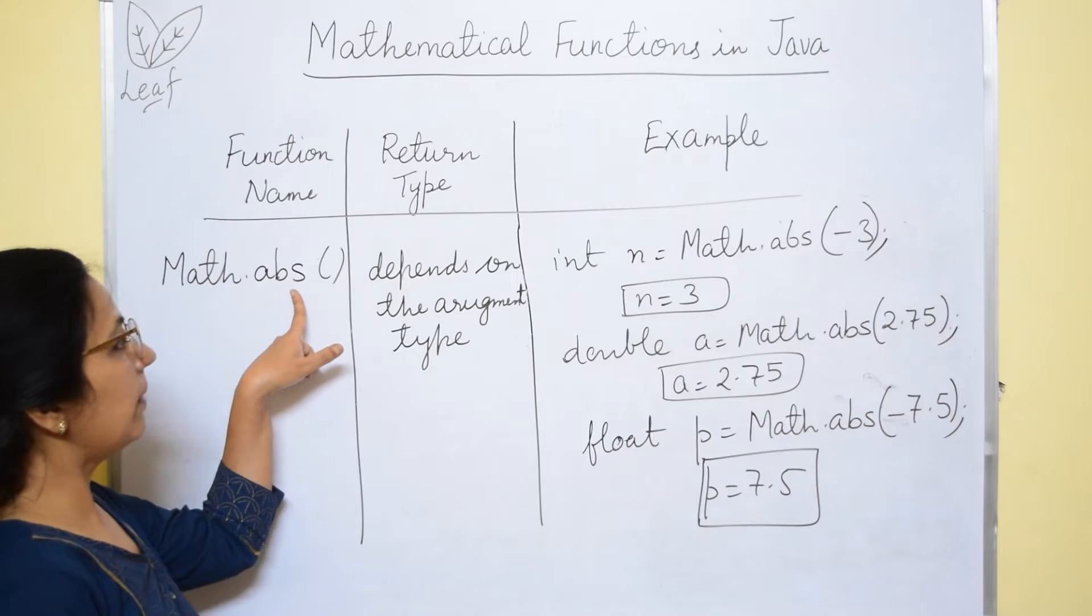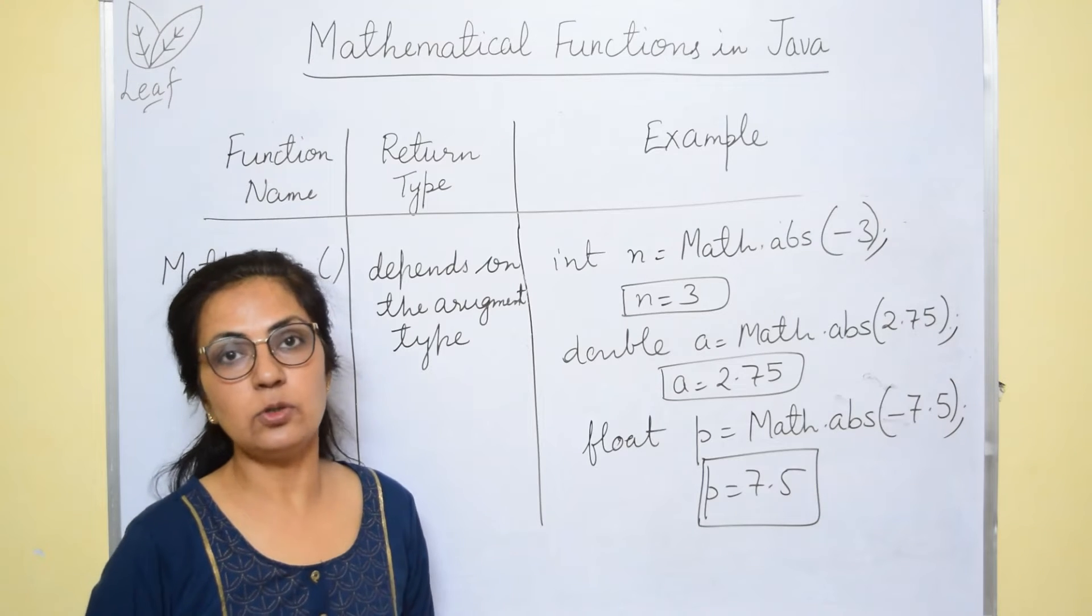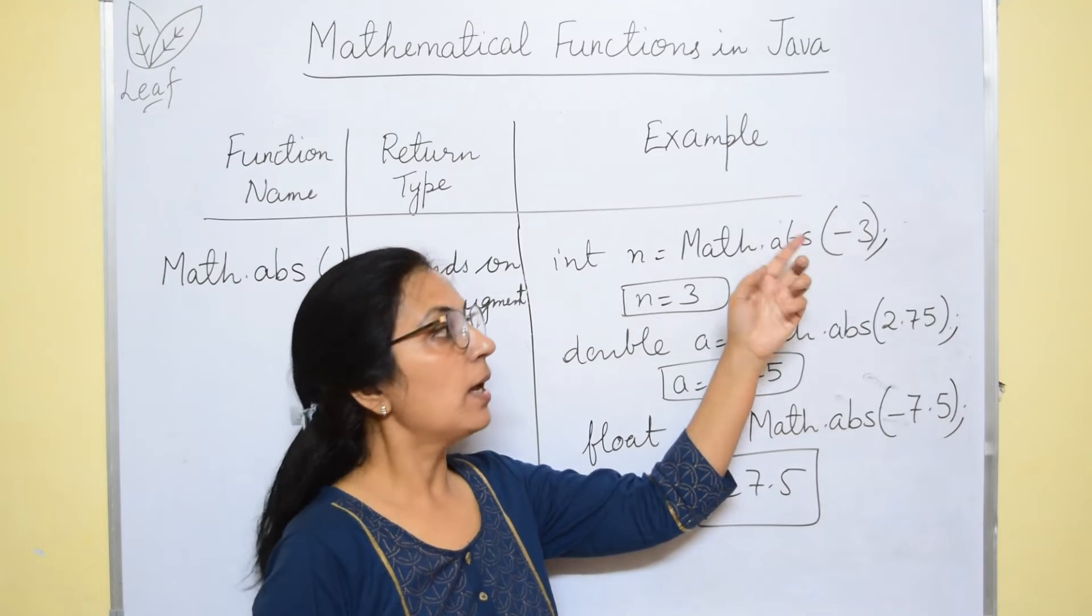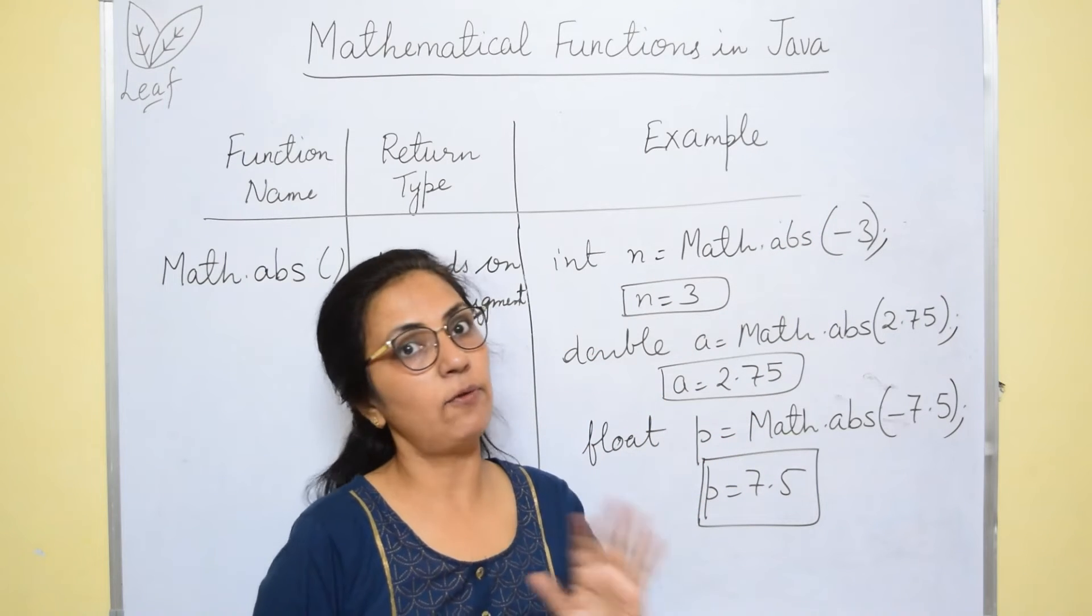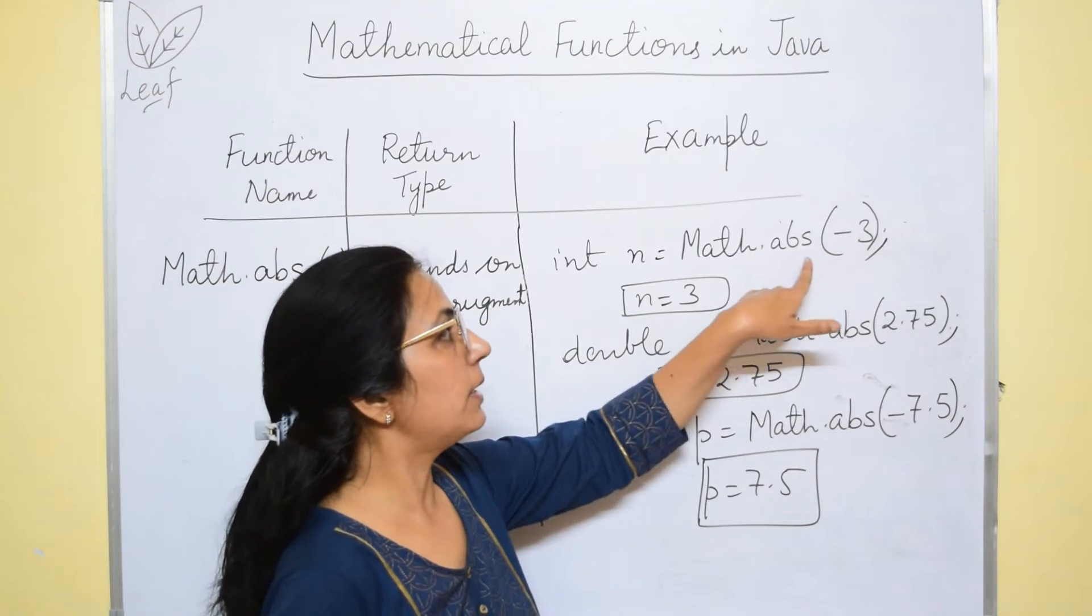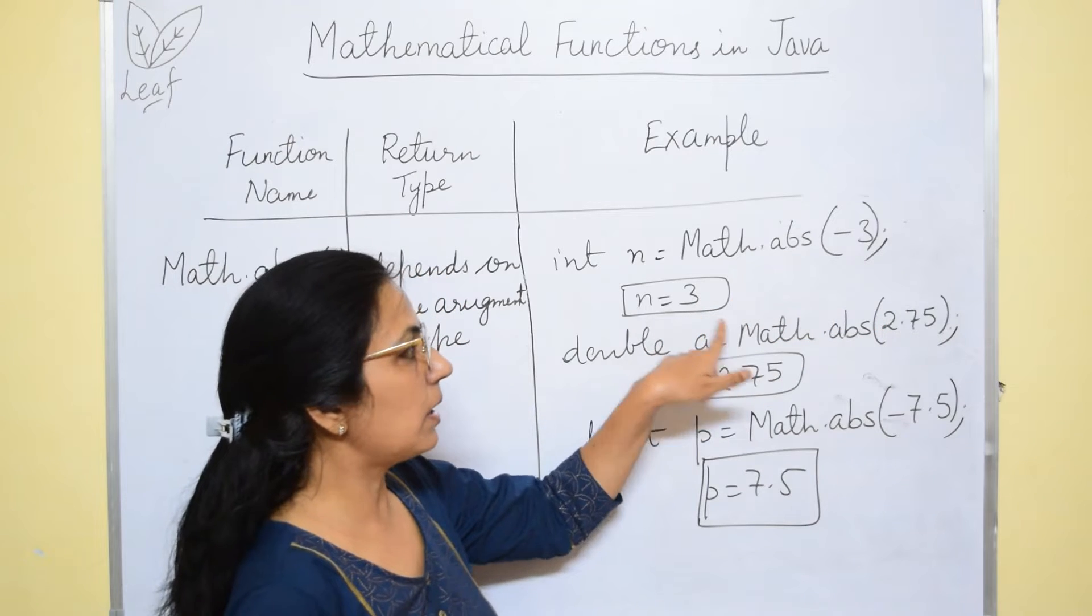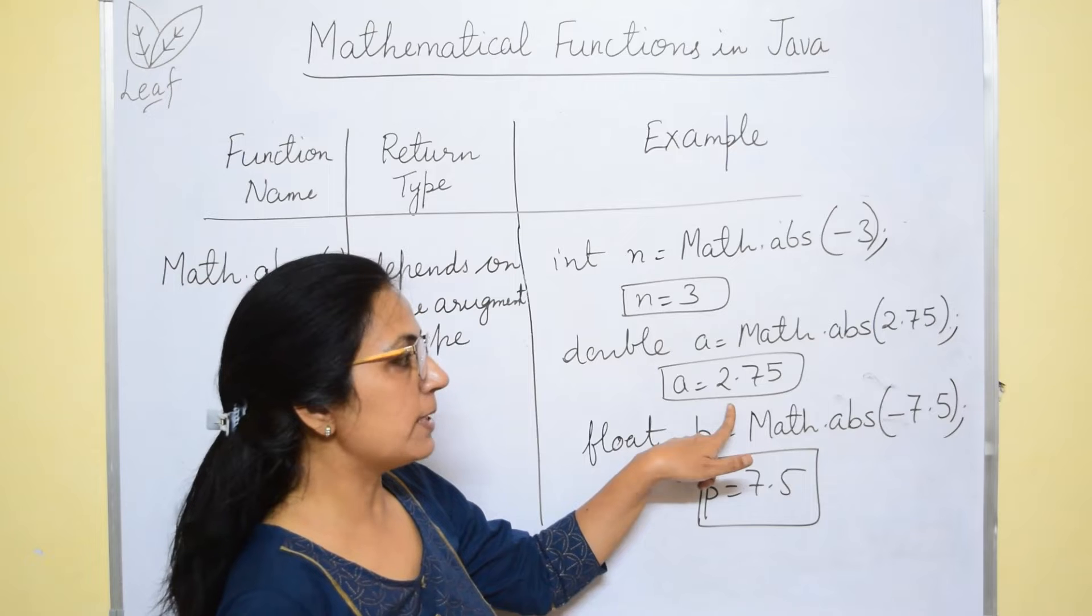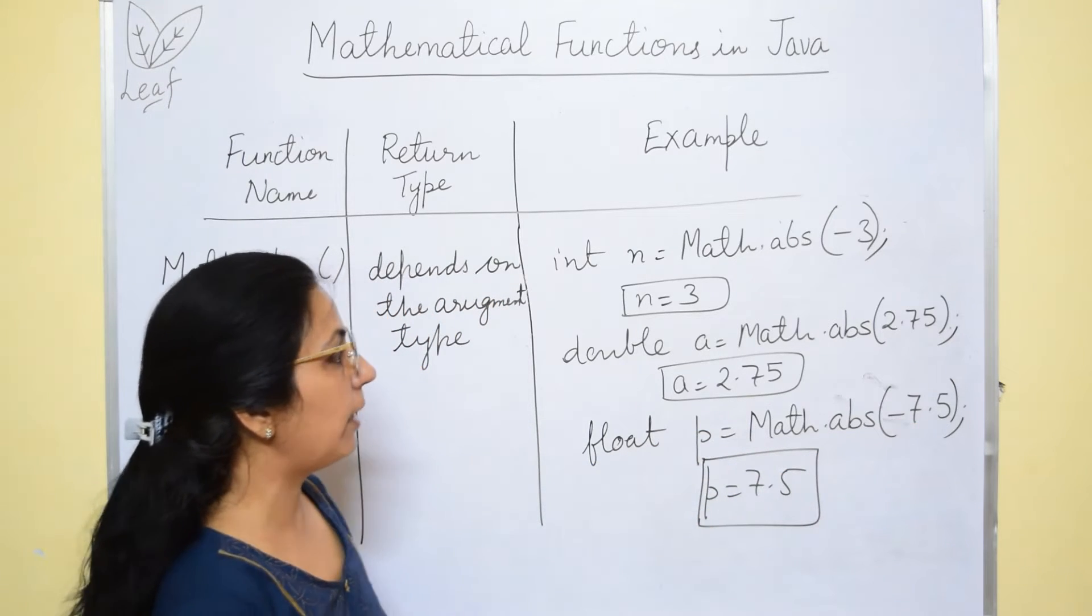Next, we have math.abs function. Abs returns the absolute value of the given number. That means only the magnitude. It just removes the sign. If it is positive, positive is removed. If it is negative, negative is removed. Only the value it returns. Math.abs of -3 will be 3. Math.abs of 2.75 will be 2.75. -7.5, answer will be 7.5.